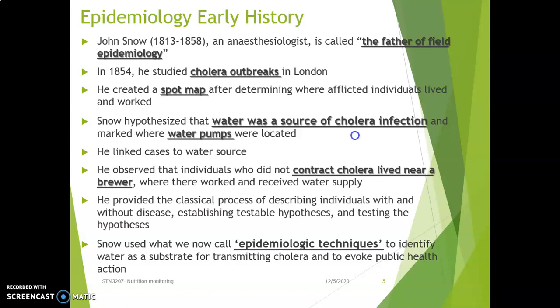John Snow also found that individuals working at a nearby brewery did not get cholera at all, because they did not take water from that contaminated source — they drank the brewery's water instead. This technique introduced by John Snow is what we call an epidemiologic technique.